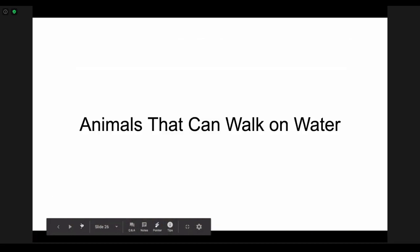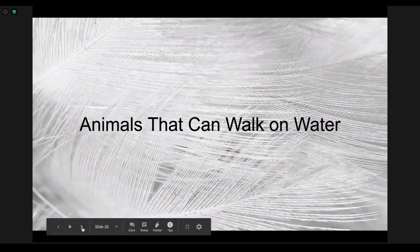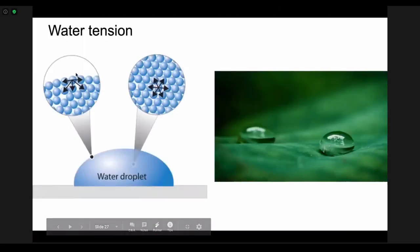There are also some animals that can walk on water. Water has water tension, and so here we have the water molecules kind of all attracted to each other. Here, so when you drop water on the leaf it doesn't lay flat on the leaf, it makes this ball of water because of the water tension.